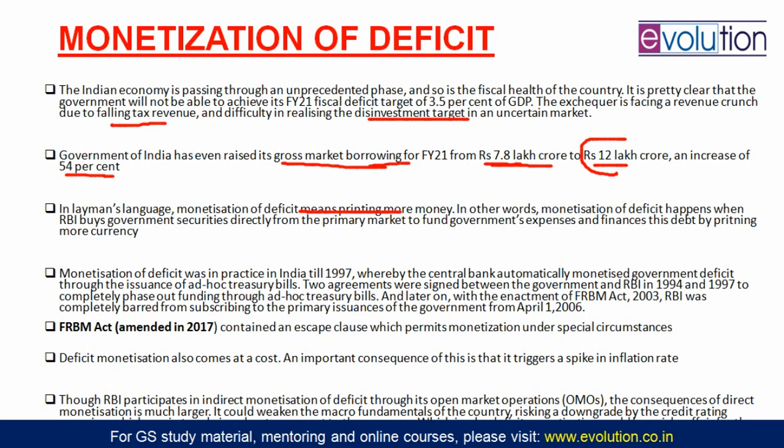In layman's language, monetization of deficit simply means printing more currency to finance your deficit. This is not something new. Monetization of deficit was practiced in India until 1997, when the central bank automatically monetized the government deficit by buying ad hoc treasury bills. But later, two agreements were signed between the government and the RBI — one in 1994 and one in 1997 — phasing out funding through ad hoc treasury bills.